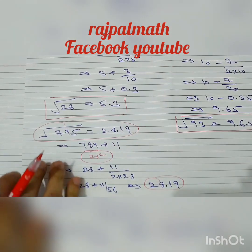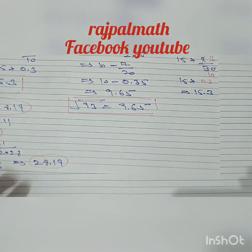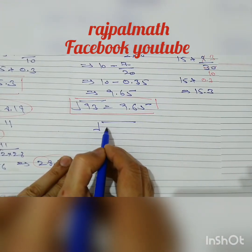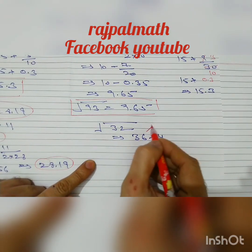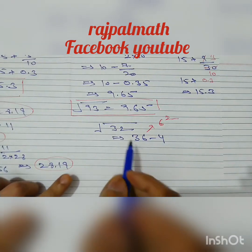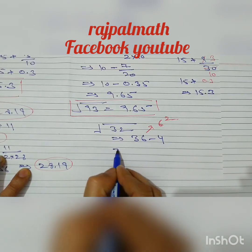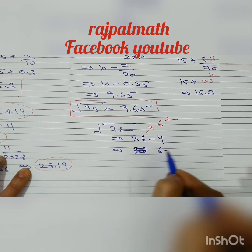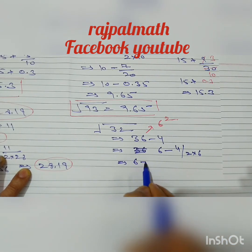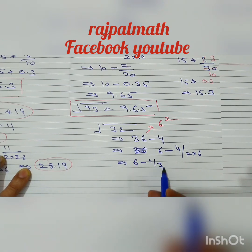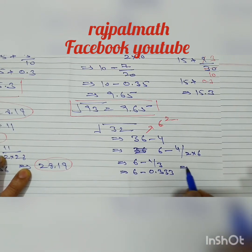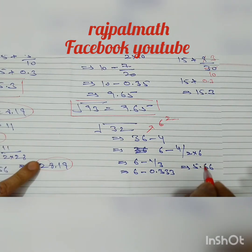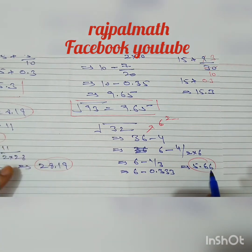One last example: find the square root of 32. 32 can be written as 36 minus 4, where 36 is 6 squared. Applying the formula: 6 minus 4 over (2 times 6), which implies 6 minus 4 by 12, giving 6 minus 1 by 3, which is 6 minus 0.333. This implies 5.666. Therefore, the value of under root 32 is 5.66.